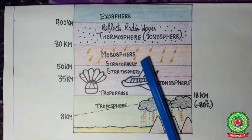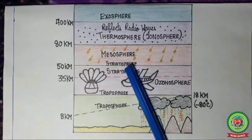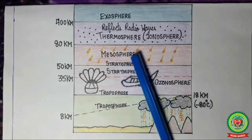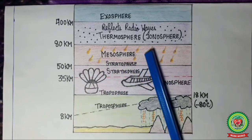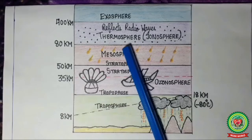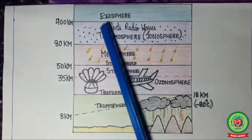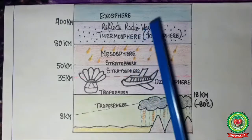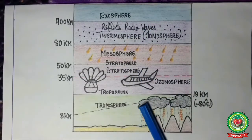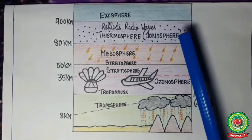Then in the mesosphere, the temperature again starts falling. When we reach the upper part of the mesosphere, the temperature again reaches up to minus 80 degrees Celsius. Then in the thermosphere, the temperature starts increasing until we reach a height of 400 kilometers — the uppermost layer of the thermosphere — where the temperature reaches up to 1000 degrees Celsius. So in different layers of the atmosphere, temperature increases or decreases due to various reasons.